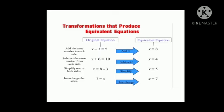The original equation given is x minus 3 is equal to 5. Now, to balance the equation, we will add the same number to each side. That is, we will add 3 on both sides. After addition of 3 on both sides, that is, x minus 3 plus 3 is equal to 5 plus 3 gives us the answer x equal to 8.